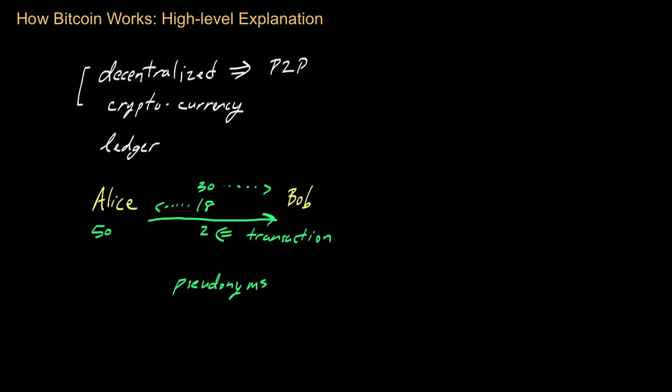Now, Alice will take these transaction details and apply what's known as a digital signature to these transaction details. And the digital signature is basically the mathematical analog of a traditional signature. It really binds Alice's identity to the details of this transaction. And by Alice's identity, again, I mean her identity within the Bitcoin system. And this binding is really done in a cryptographically strong way.